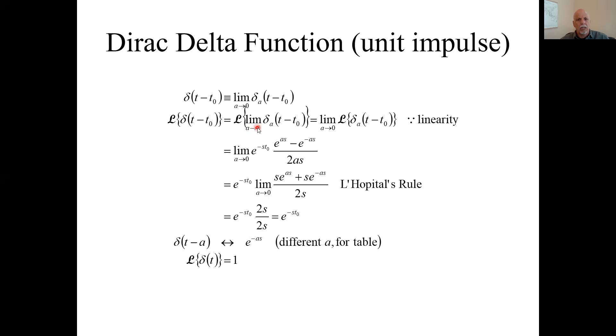The Laplace transform is the Laplace transform of this limit. The Laplace transform is a linear operator, so we can interchange the limit and the operation. So we can take the limit of the Laplace transform of this guy, which is on the previous chart. Here, if we just set A to zero, we get one minus one over zero or zero over zero. So we use L'Hôpital's rule. Take the derivative of numerator and denominator. We have that. And now when you set A to zero, these E to the plus or minus AS become ones. We have 2S over 2S.